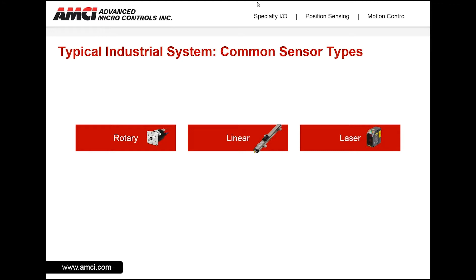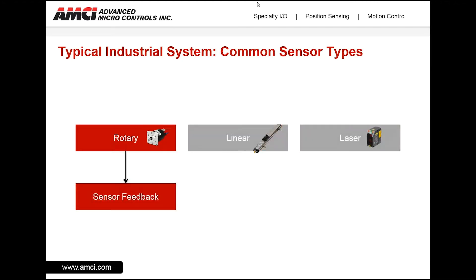For linear applications, we often see magnetostrictive sensors or LVDTs being used. And for non-contact applications, lasers are often used to provide position feedback in linear applications. Our focus today will be on rotary applications.